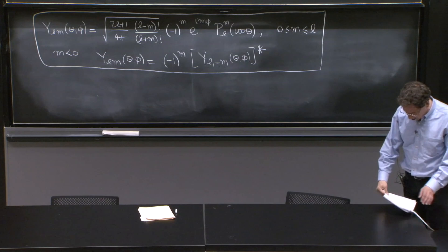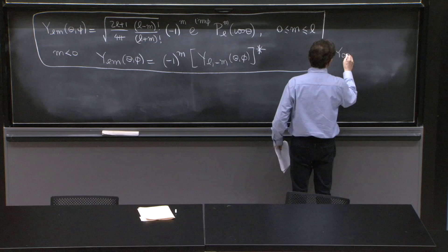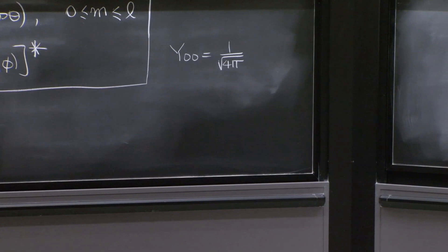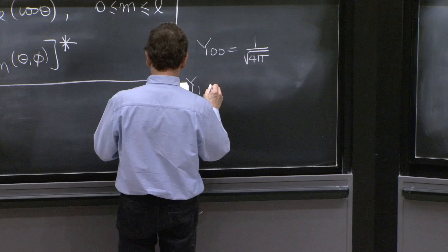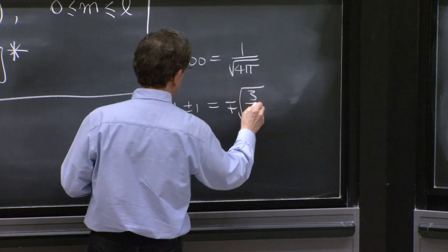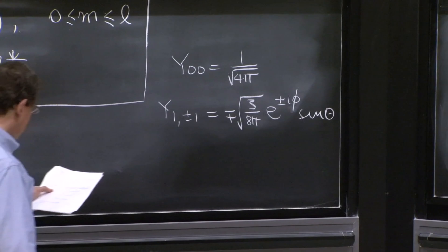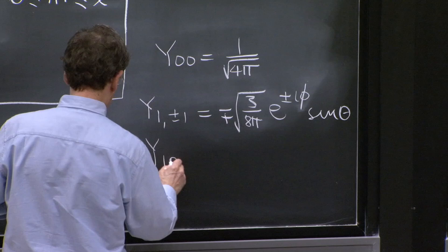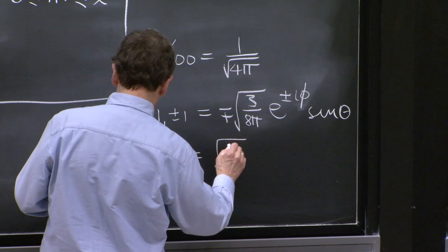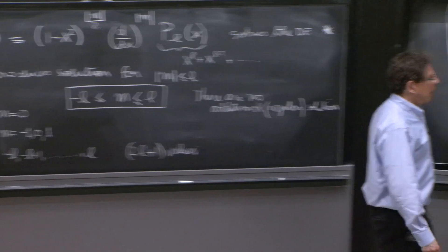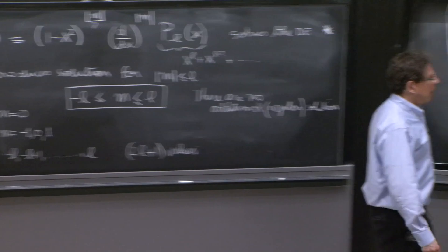The only one I really remember is that y0, 0 is a constant. That's 1 over 4 pi. That's simple enough. No dependence. L equals 0, m equals 0. Here is another one. y1 plus minus 1 is minus plus square root of 3 over 8 pi e to the plus minus i phi sine theta. And the last one. So we're giving all the spherical harmonics with l equals 1. So with l equals 1, remember we mentioned that you would have three values of m. l equals 1, here they are, plus or minus 1 and 0.